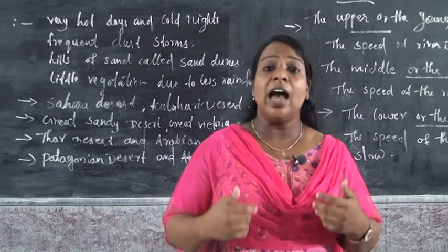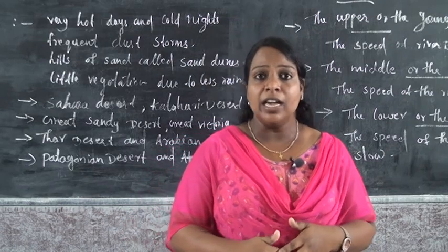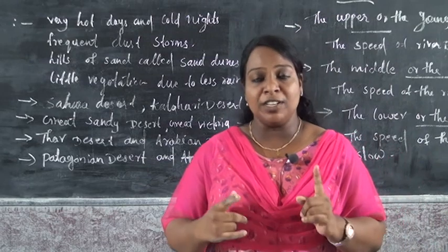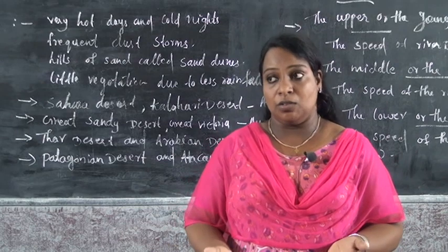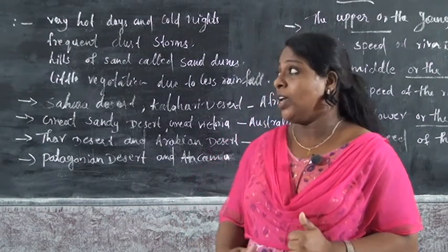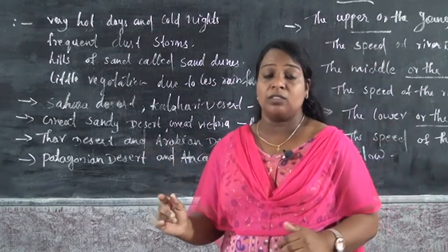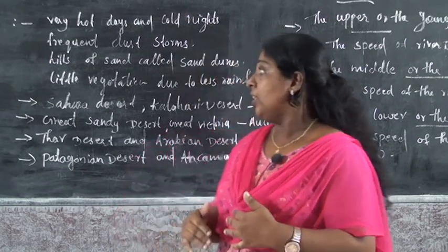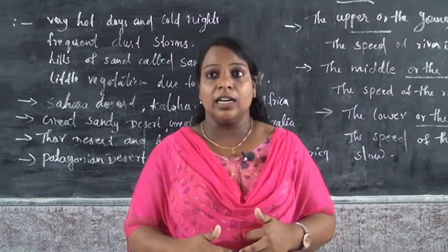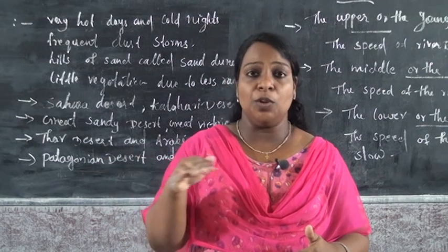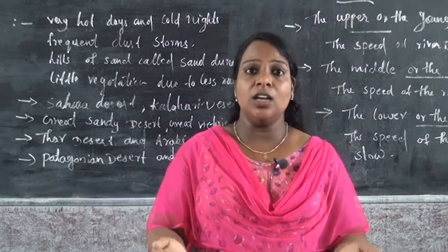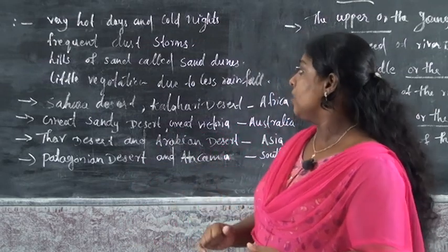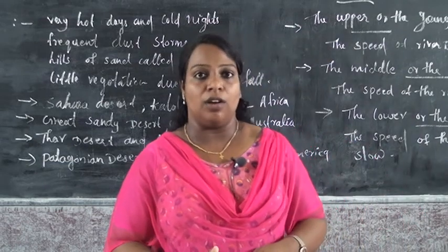What are the features of desert? The first feature is very hot days and cold nights. The second feature is frequent dust storms. The third feature is hills of sand called sand dunes. The fourth feature is little vegetation due to less rainfall. These are the four features of desert.